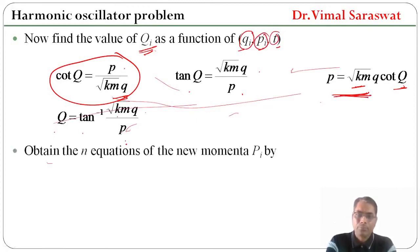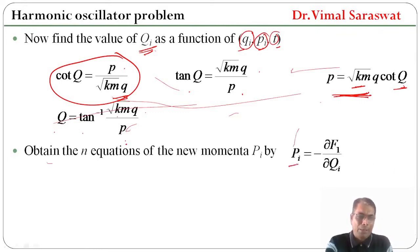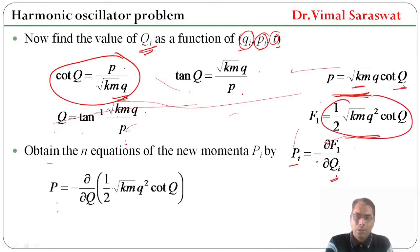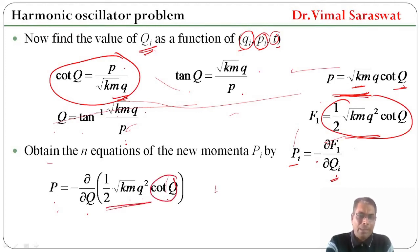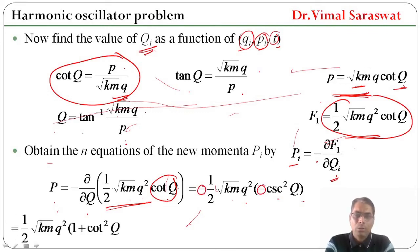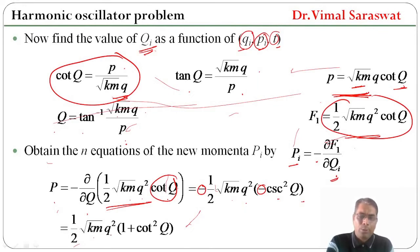Next, we obtain the equation for the new momenta: P = −∂F1/∂Q. Differentiating F1 = ½√(km) · q² · cot(Q) with respect to Q gives −½√(km) · q² · (−cosec²Q). The two negatives cancel, so P = ½√(km) · q² · cosec²Q, and using the identity cosec²Q = 1 + cot²Q, we substitute accordingly.